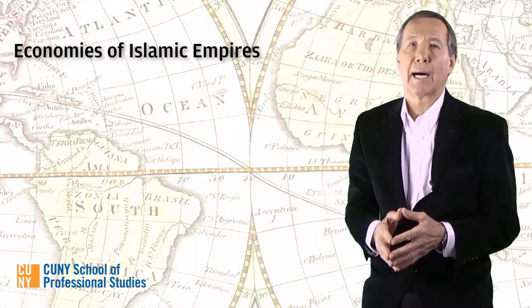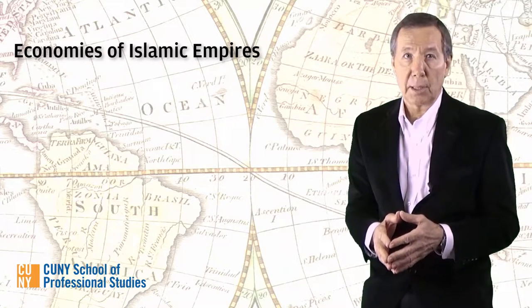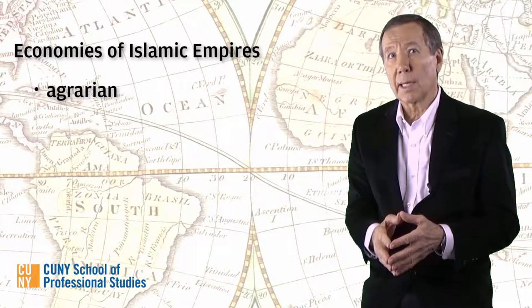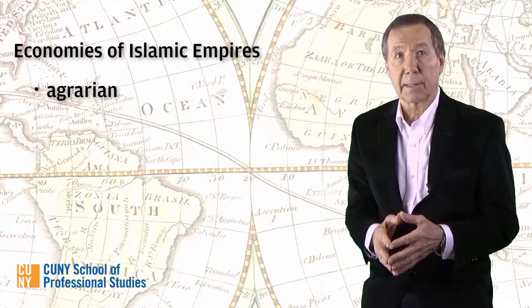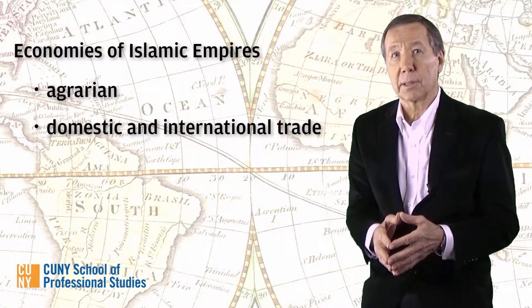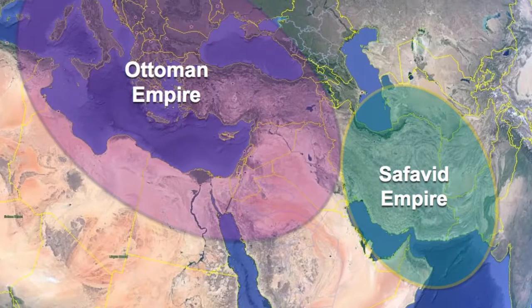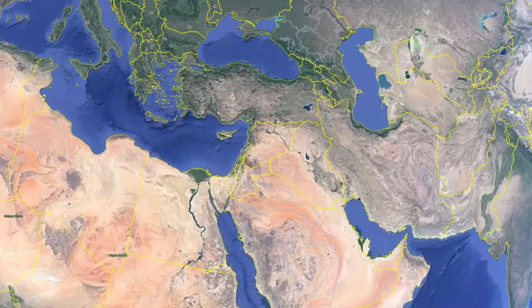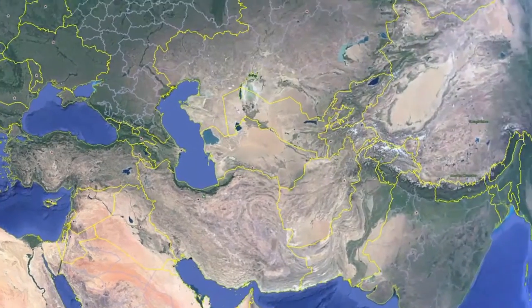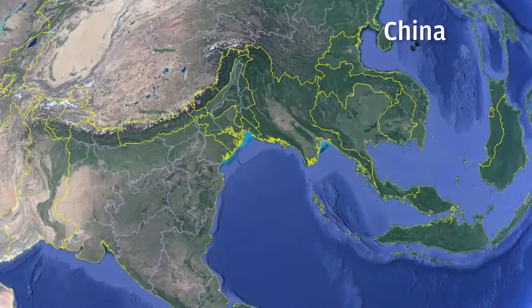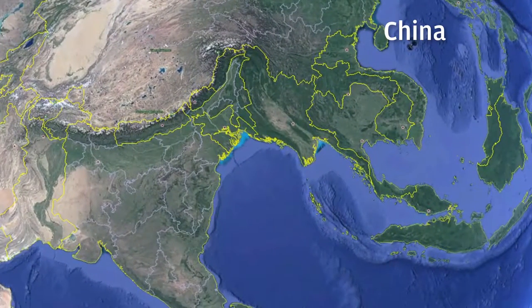Today we'll take a look at their economies, which, although fundamentally agrarian, also relied on a significant amount of domestic and international trade. Both the Ottomans and the Safavids imported goods from Eastern Asia — in fact, all the way from China.